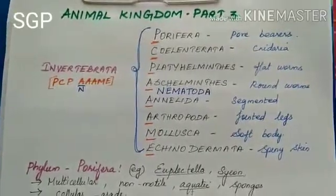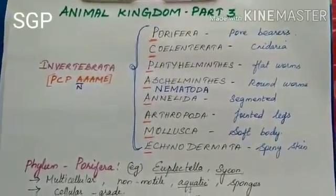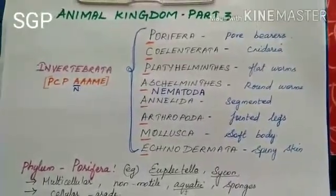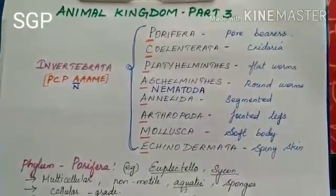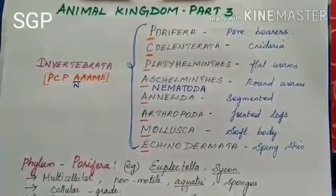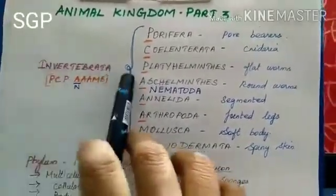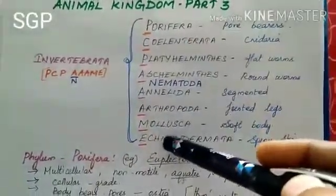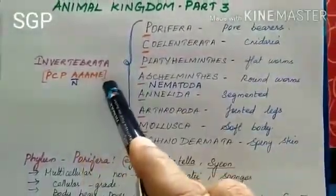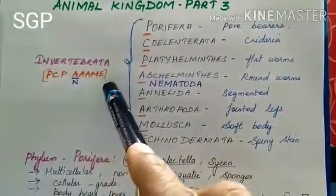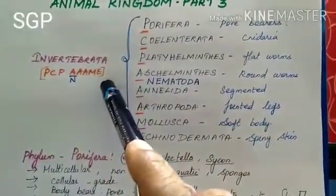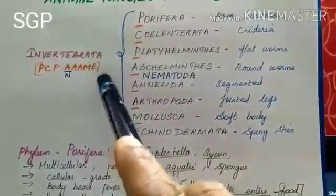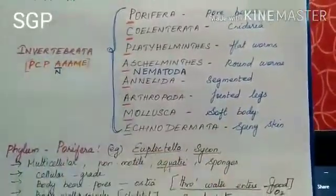Hello students. Today we are going to learn about Animal Kingdom Part 3. In this part you are going to learn about different phylums present in the Invertebrata group. There are 8 phylums present in Invertebrata. Invertebrate means organisms which do not possess a backbone come under this Invertebrata group.